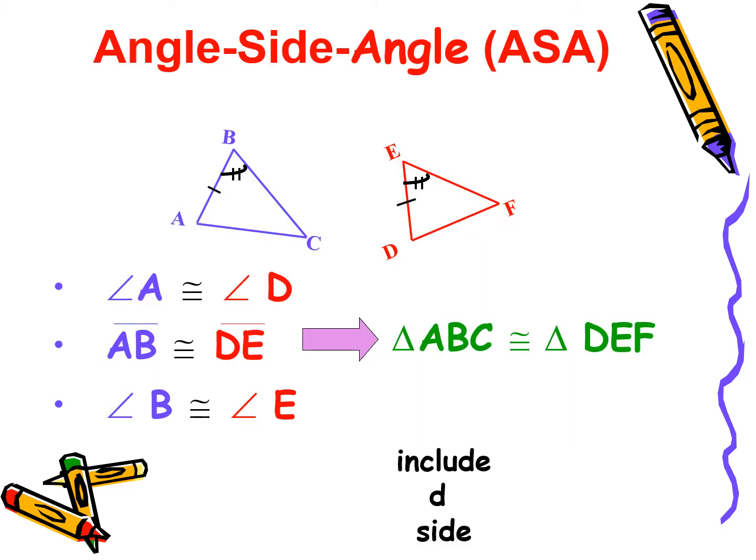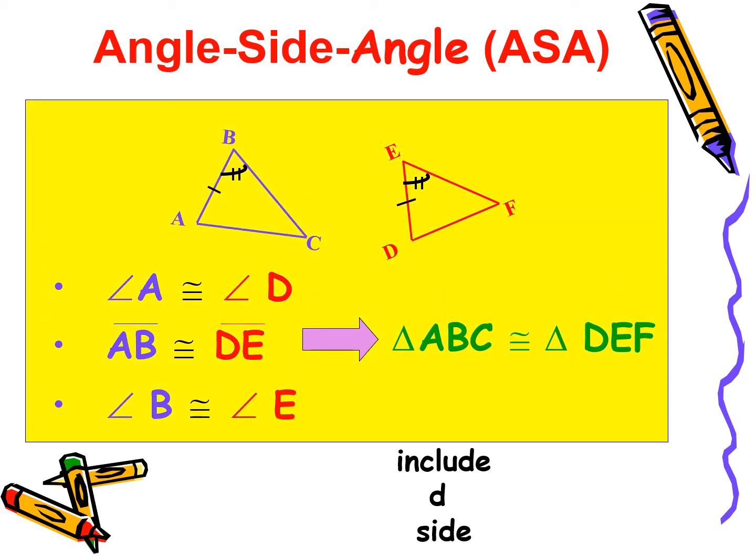The next condition is Angle-Side-Angle (ASA). When two angles of a triangle and an included side are equal to the corresponding two angles and included side of another triangle, then the triangles are congruent. Like in this figure with triangle ABC and DEF, if angle A is congruent to angle D, side AB is congruent to side DE, and angle B is congruent to angle E, then triangle ABC is congruent to triangle DEF.